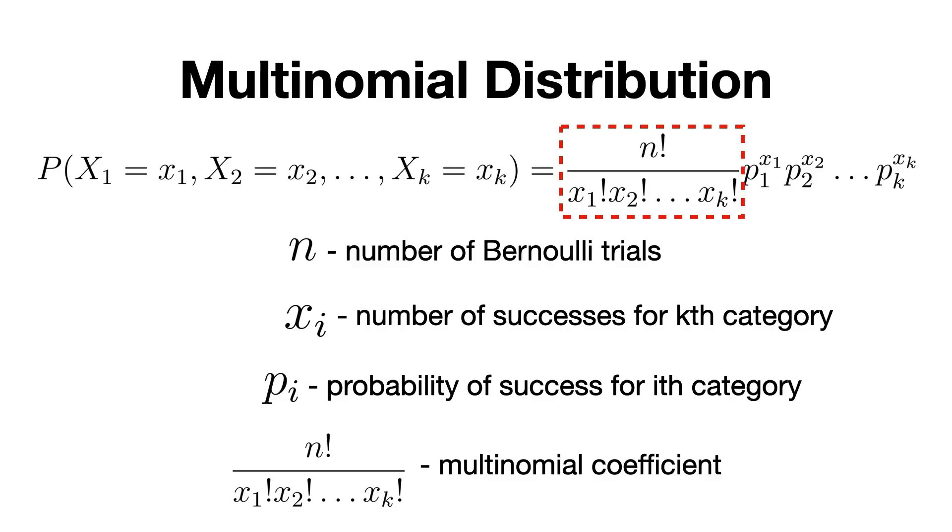Thus, this formula tells us the probability of seeing a specific distribution of outcomes across multiple trials.